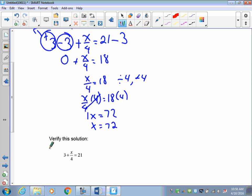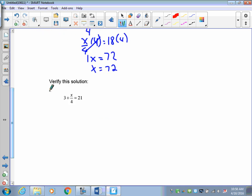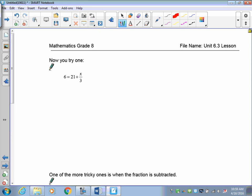So let's verify this. I said x was 72. So let's take out the x, put the 72 in its place. And of course 72 divided by 4 is 18. So 21 is equal to 21. That means we did do it correctly.